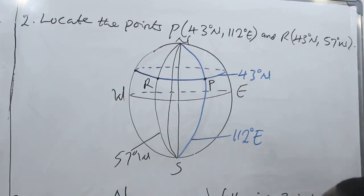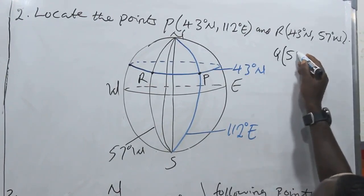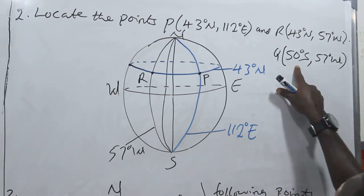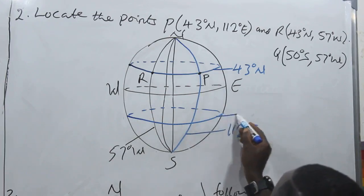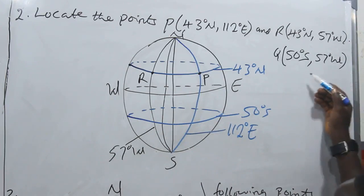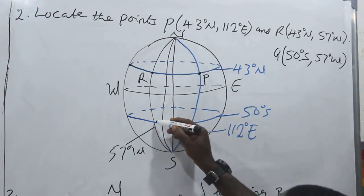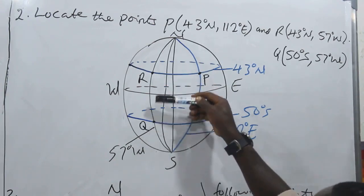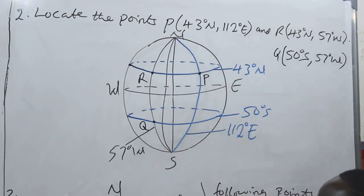Now let's add a third point Q at latitude 50 degrees south and longitude 57 degrees west. Fifty degrees south means we go below the equator, and 57 degrees west is already plotted. Where they meet is point Q. You now see that R and Q lie on the same longitude of 57 degrees west, and that means R and Q are on a great circle, because all points that lie on a line of longitude are on a great circle.